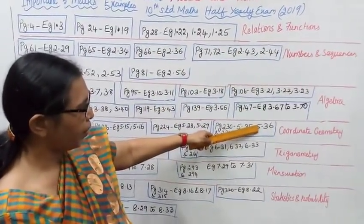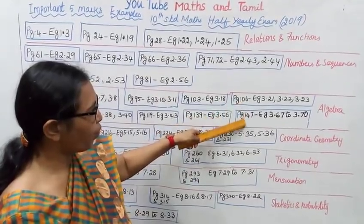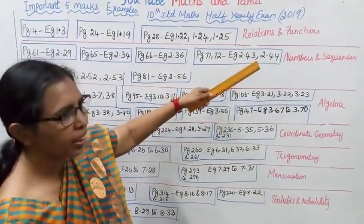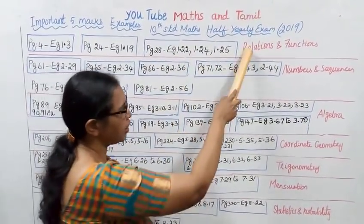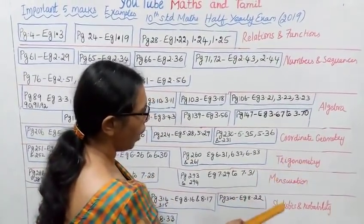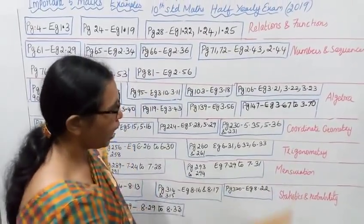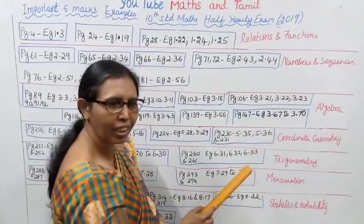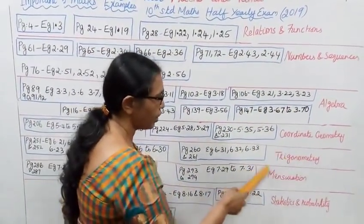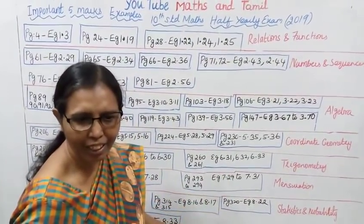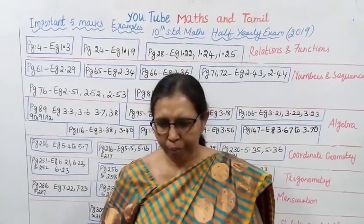To summarize: Coordinate Geometry, Statistics, Algebra — page 147, 106, 147 — don't forget these. Relations and Functions, Coordinate Geometry, Statistics and Probability are the key chapters covered. Relations and Functions — first and second — with key examples are all included.